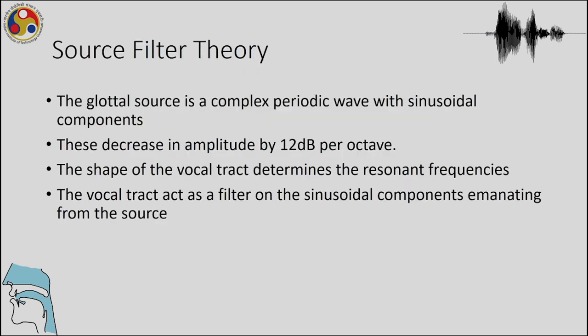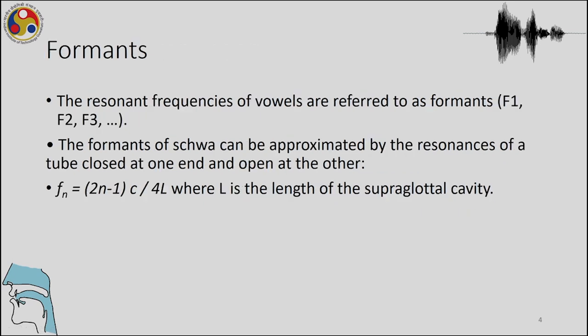In source-filter theory, the components decrease in amplitude by 12 decibels per octave, and the shape of the vocal tract determines the resonant frequencies. The vocal tract acts as a filter of the sinusoidal components from the source. The resonant frequencies of vowels are referred to as formants: F1, F2, F3, and so on, where F1 and F2 are the most important for quantifying the formant frequencies of vowels.